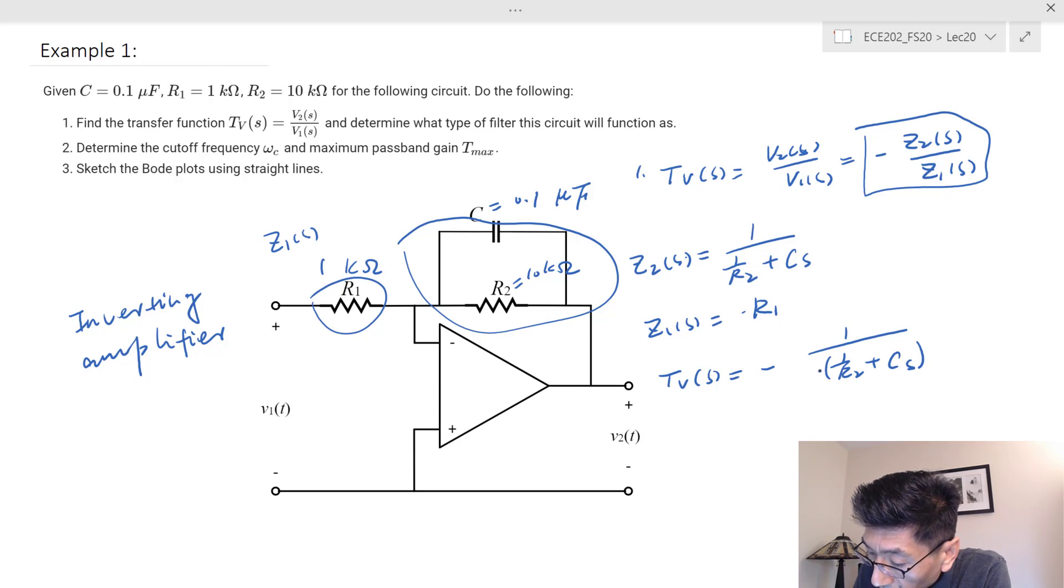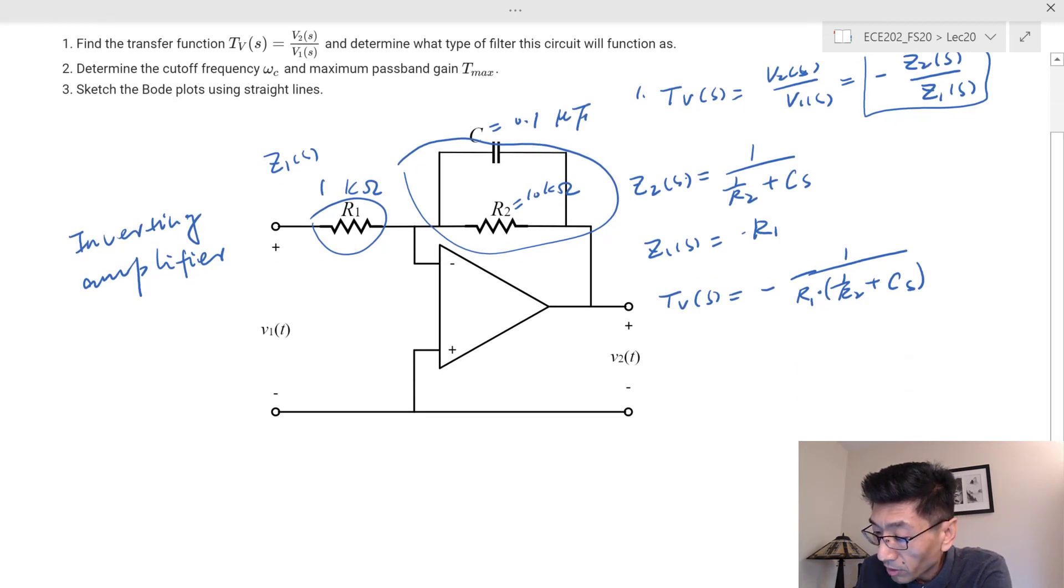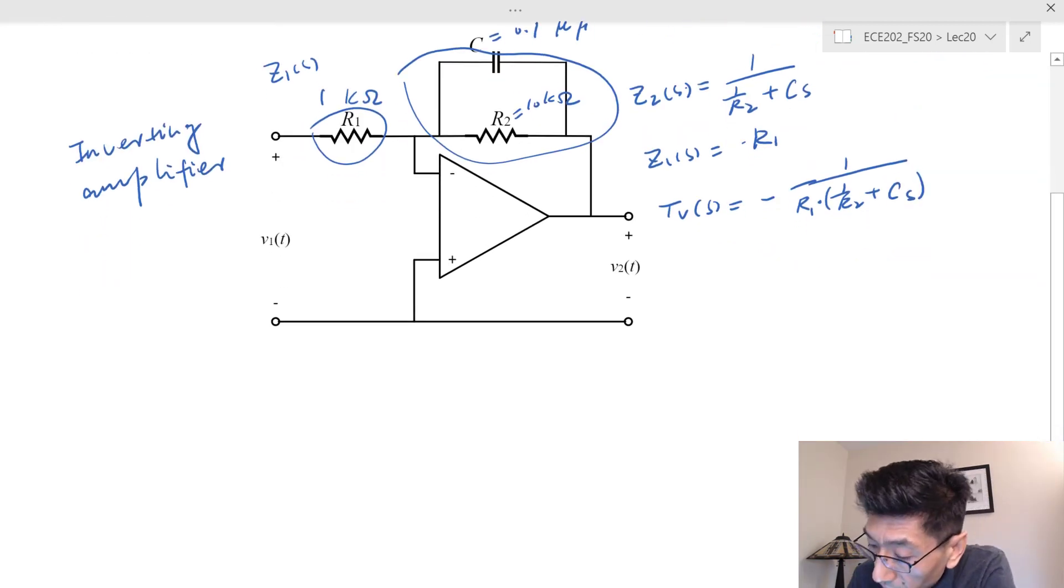I'm going to write R1 in the denominator. I also want to get the form of 1 plus Cs or something like that. So what I do is multiply the numerator and denominator by R2 over R1.